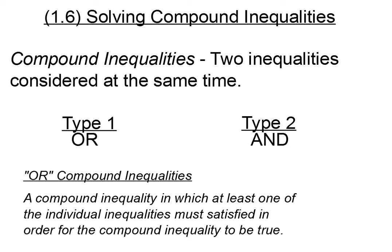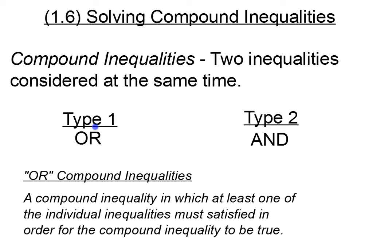Now, what is a compound inequality? Well, basically it's just two inequalities considered at the same time. We have two types. Type 1, we could have an or compound inequality. Or type 2, we could have an and compound inequality.